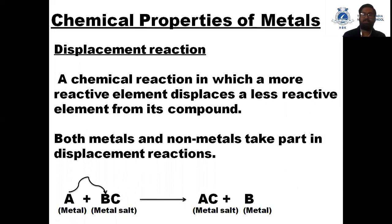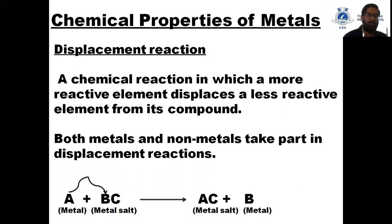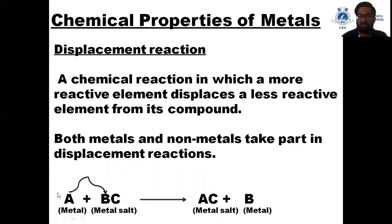Now we study one important reaction for metals: the displacement reaction. What is a displacement reaction? It is a chemical reaction in which a more reactive element displaces a less reactive element from its compound. Both metals and non-metals take part in displacement reactions. As you can see in the reaction, metal A displaces metal B from its solution.